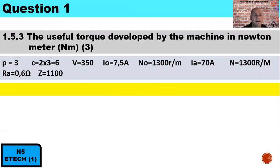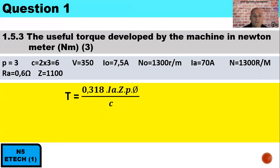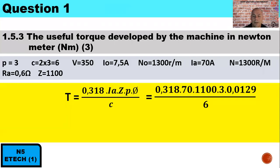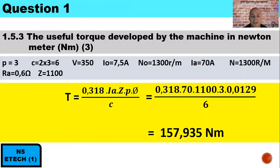Question 1.5.3: Calculate the useful torque developed by the machine in Newton metres. The torque formula is 0.318 × IA × Z × P × flux per pole, all divided by C. That is 0.318 × 70 × 1,100 × 3 × 0.0129 ÷ 6 (lap wound, 6 parallel paths). Therefore, the torque developed is 157.935 Newton metres.